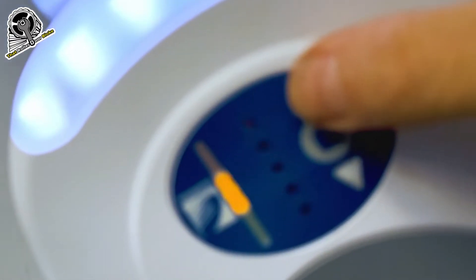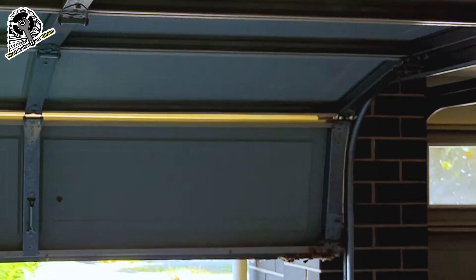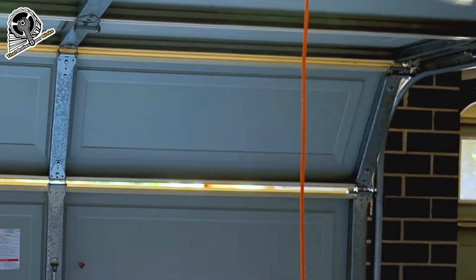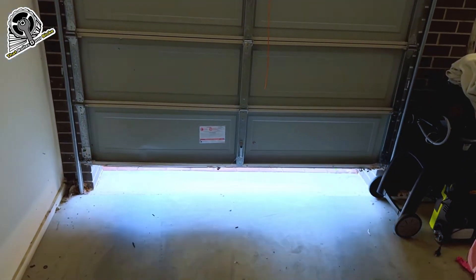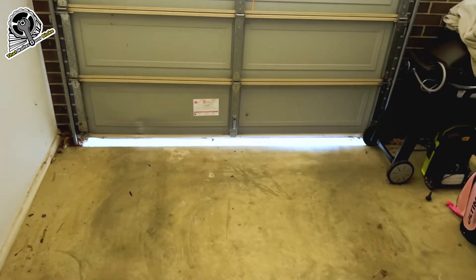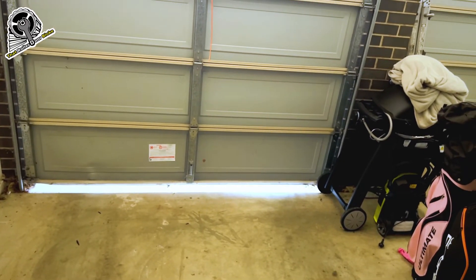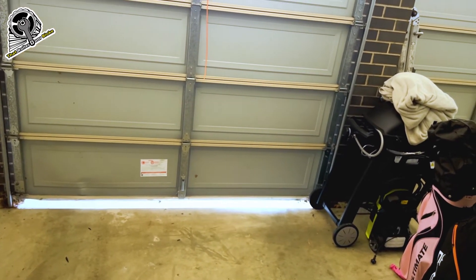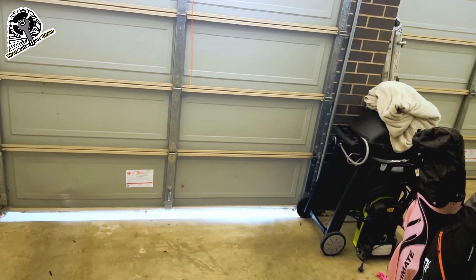That will beep, and now we can go down and set the bottom limits by pressing the down arrow. Press the down arrow until you get the door to close all the way to the floor, and just release it before you get to the weather seal. You just want to squash the door on the weather seal. If you over-close the door, you can use the up arrow to go up a bit and try again.